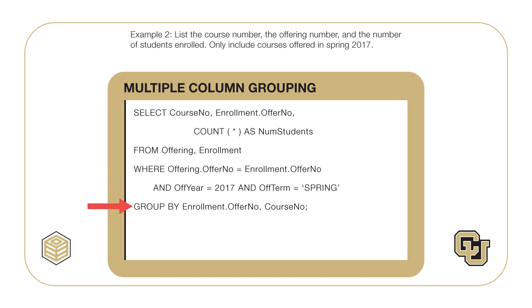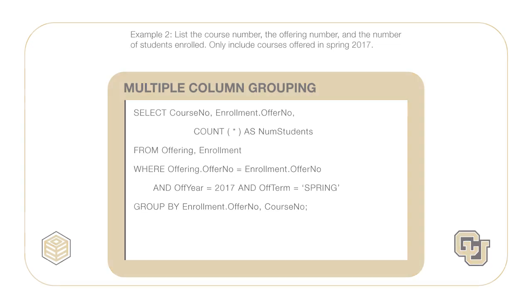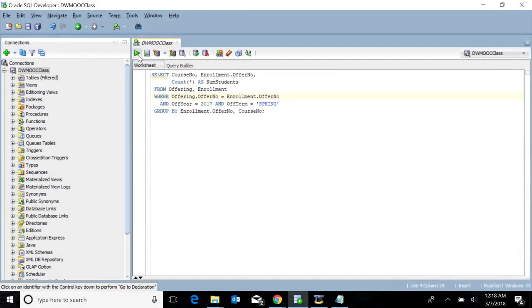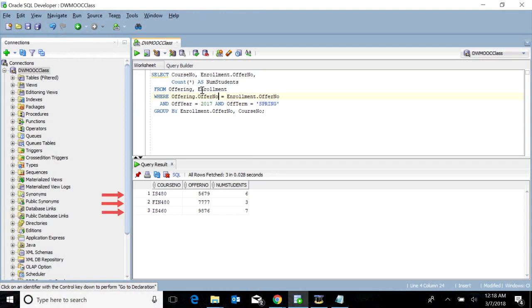The GROUP BY clause includes the offer number and course number columns. Both columns must be included in the GROUP BY clause, as they are used in the SELECT clause. Every column in the SELECT clause must be in the GROUP BY clause, except for columns used in aggregate function calculations. Let's execute Example 2 and check the results. The result contains three rows for course offerings of IS 480, Finance 480, and IS 460.